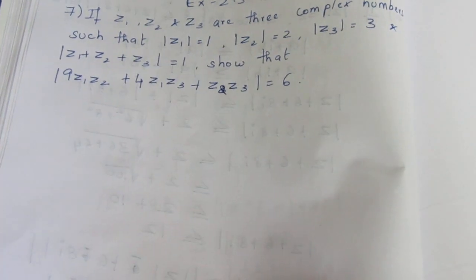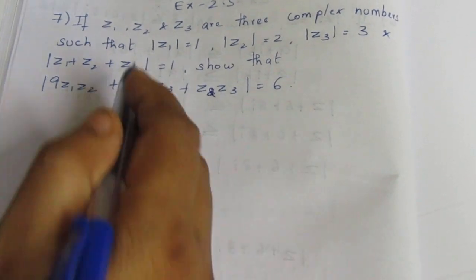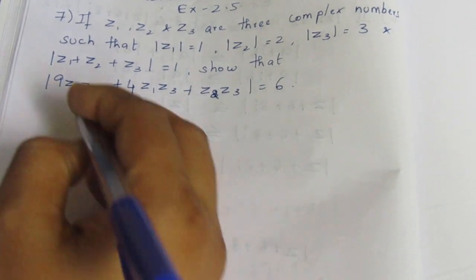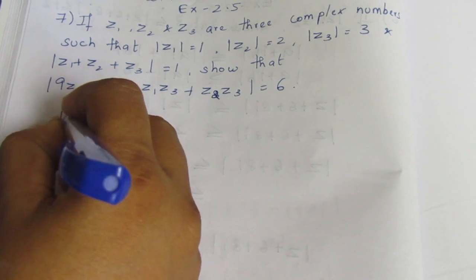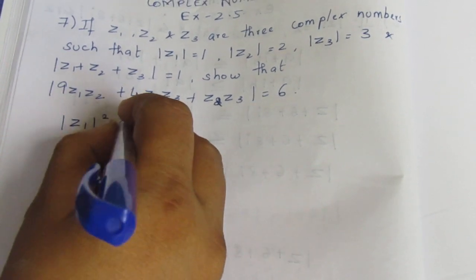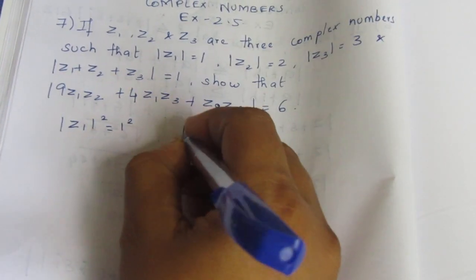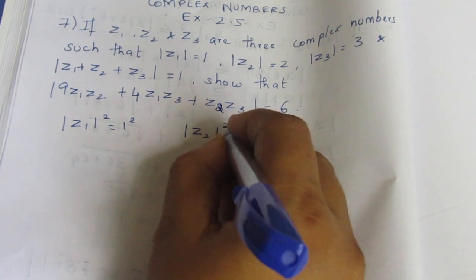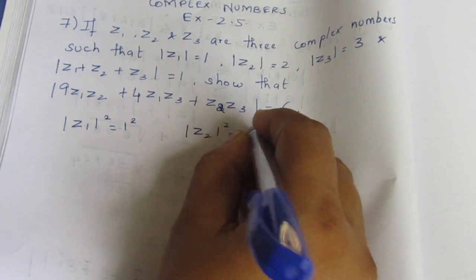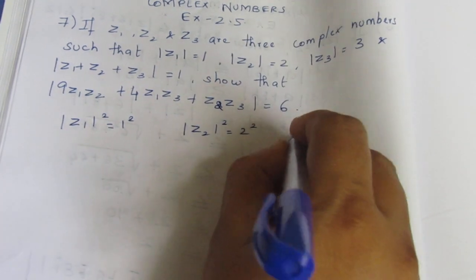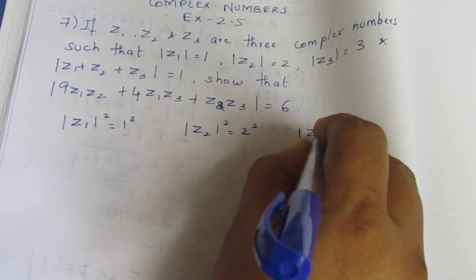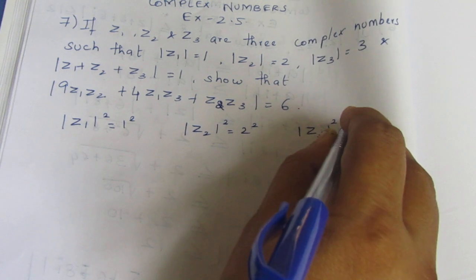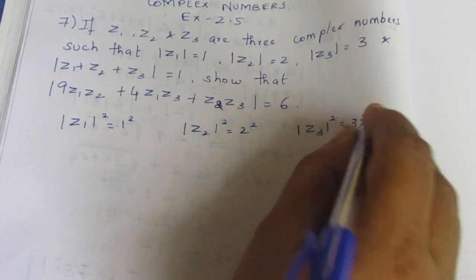We will take modulus. Squaring both sides. We can see that 1 squared, modulus Z2 squared equal to 2 squared.